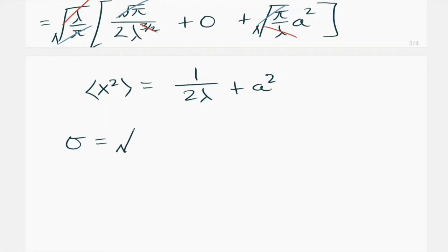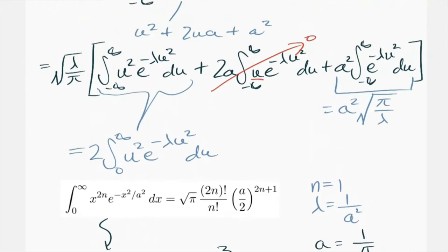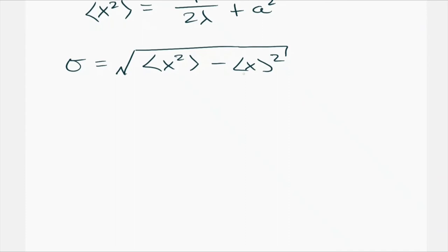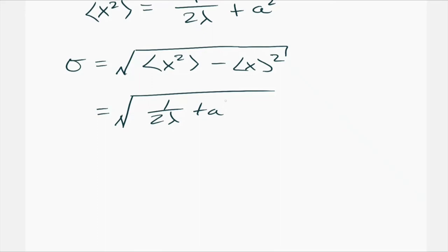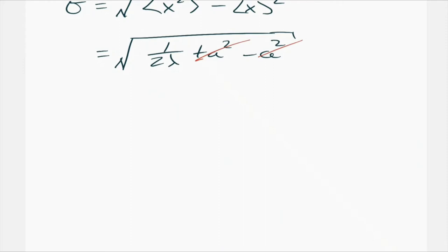Sigma equals 1 over the square root of 2λ. That's our final answer for part b. The a² terms cancel perfectly, leaving only the 1/(2λ) under the square root.